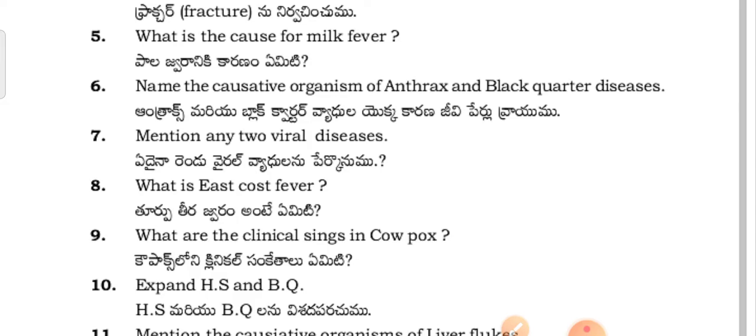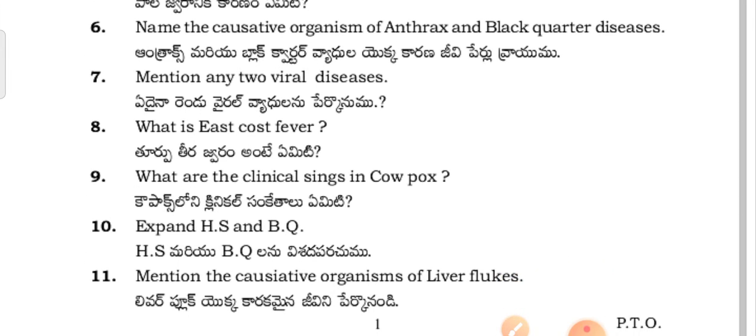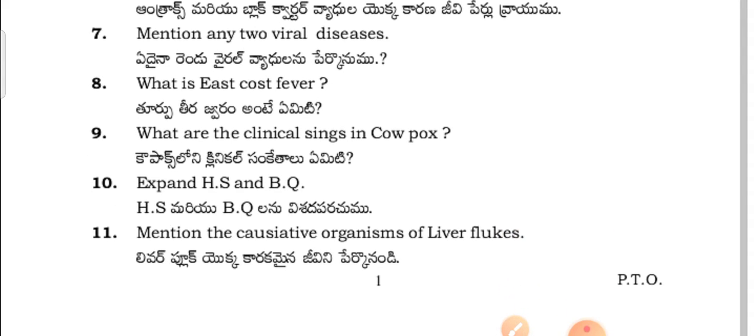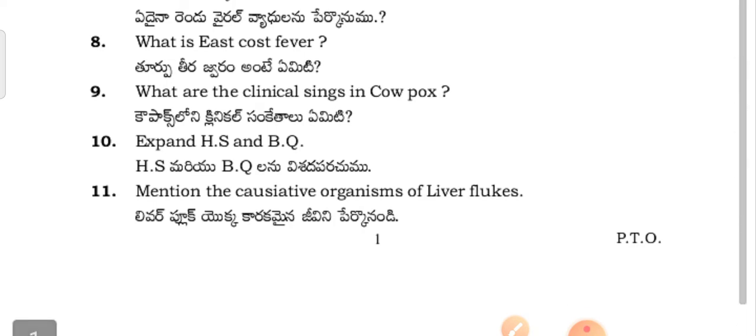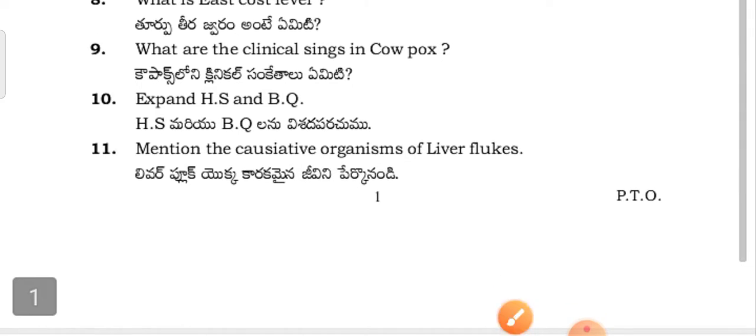The causative organisms of anthrax and black water diseases - mention anthrax and black water. Mention any two viral diseases. What is East Coast Fever? Describe the clinical signs of cowpox.